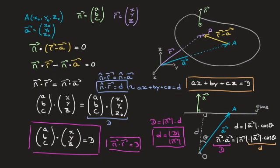We now have a much better understanding of how to derive the scalar product form of a plane's equation, as well as the Cartesian equation. We've seen that capital D is a scalar multiple of the distance from the plane to the origin, derived a formula to calculate that distance, and seen that using a unit normal vector makes the right-hand side equal to the perpendicular distance from the plane to the origin in both forms.